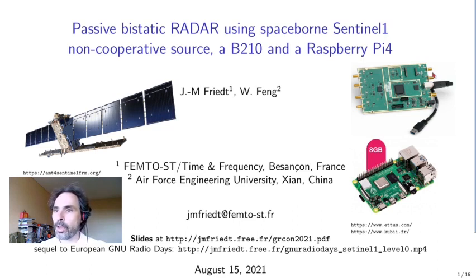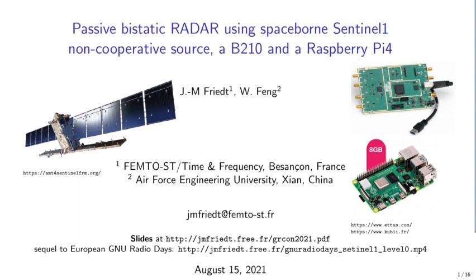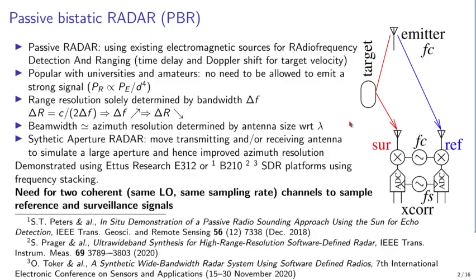We are going to complete this endeavor with passive bi-static measurement using the same source. Passive radar is based on the idea of using existing radio frequency emitters, under the assumption that we are not aware of what the emitter is transmitting.